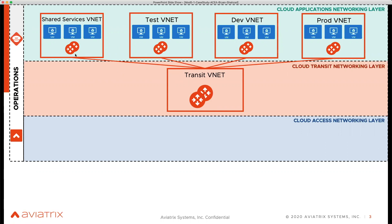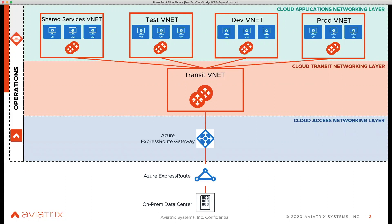For connectivity to their on-prem data center, they had already purchased ExpressRoute. We provided them a solution called HPE — High Performance Encryption, sometimes called insane mode — where they can deploy an Aviatrix hardware appliance in the on-prem data center and achieve line-rate throughput on the Azure ExpressRoute link. That's how we meet their encrypted connectivity requirement.